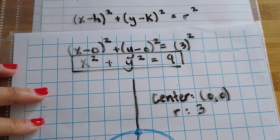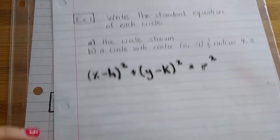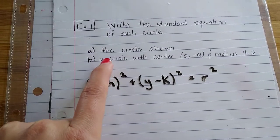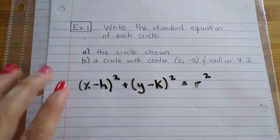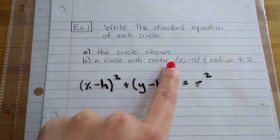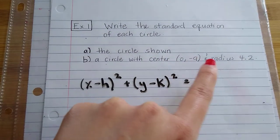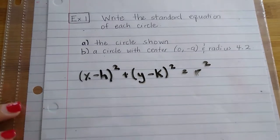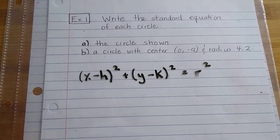Okay, so now we're going to solve for the next portion. For this next part, letter B, it says to write the standard equation of a circle with center at (0, -9) and a radius of 4.2. So I'm just going to solve this here directly.